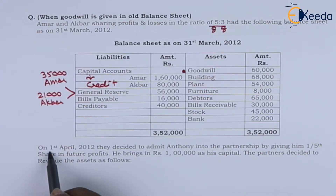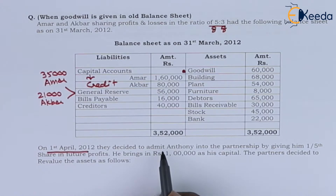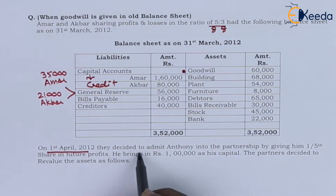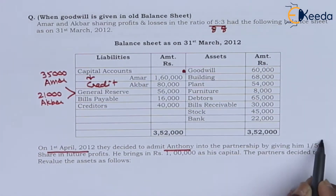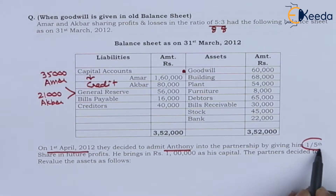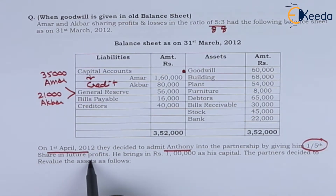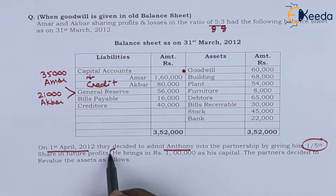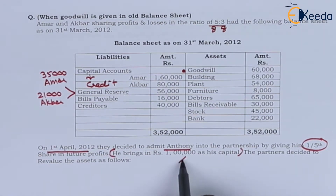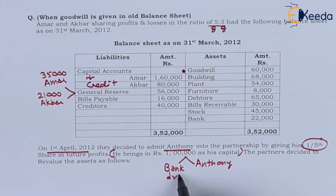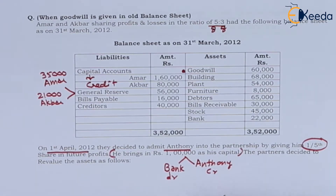On 1st April 2012, they decided to admit Anthony into partnership by giving him one-fifth share in future profits. He brings Rs. 1,00,000 as capital. For this 1,00,000, bank account will be debited and Anthony's capital account will be credited.